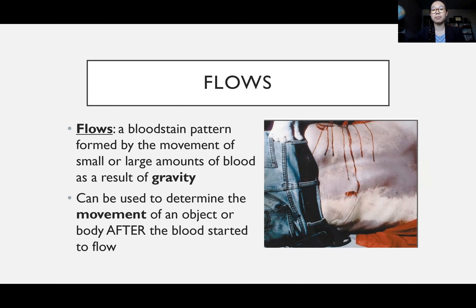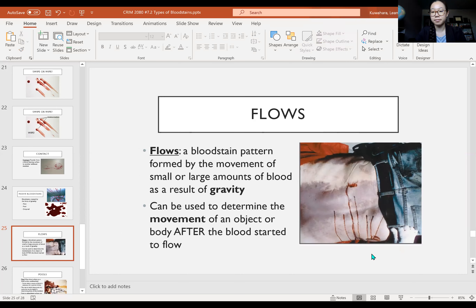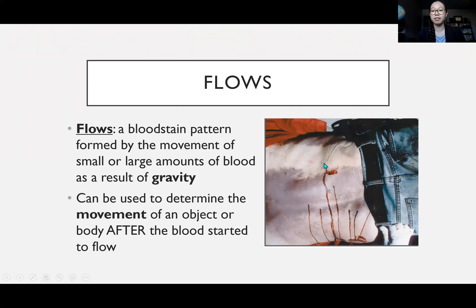A flow is a bloodstain pattern formed by the movement of large amounts of blood as a result of gravity, and it can help determine the movement of an object or body after blood had already started to flow. If an individual is bleeding and the blood is falling downward consistent with gravity, but we find the body in a different orientation where blood flows seem to oppose or defy gravity, that would indicate the body was probably moved after they had already started bleeding and the blood drops had begun to dry.